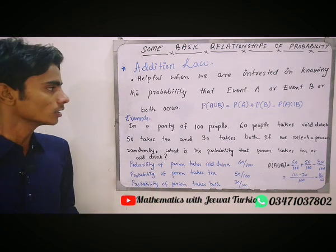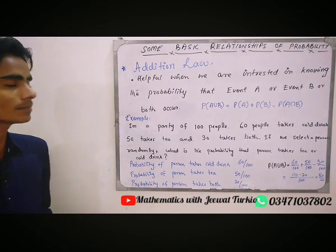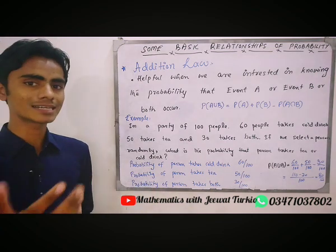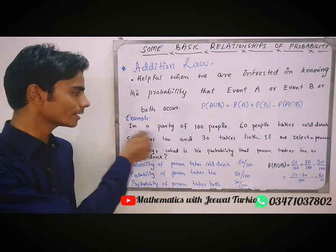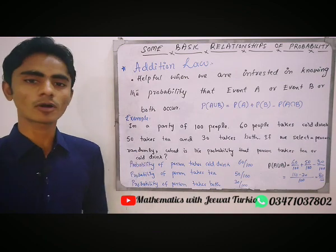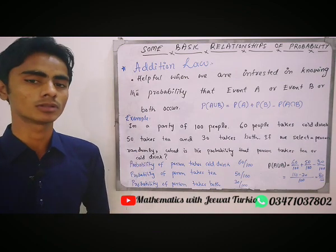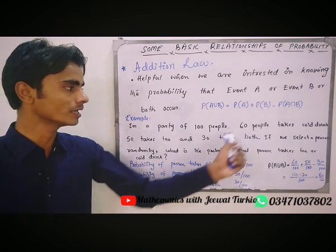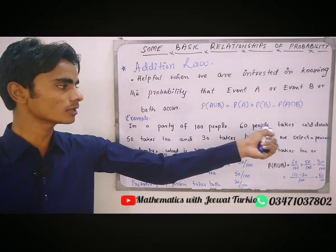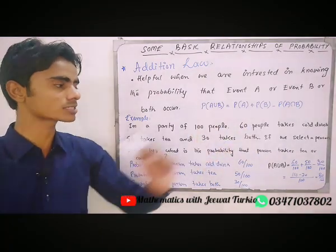For example, in a party of 100 people — a party in which there are 100 people — 60 people text coding (cold ring) and 50 text T.